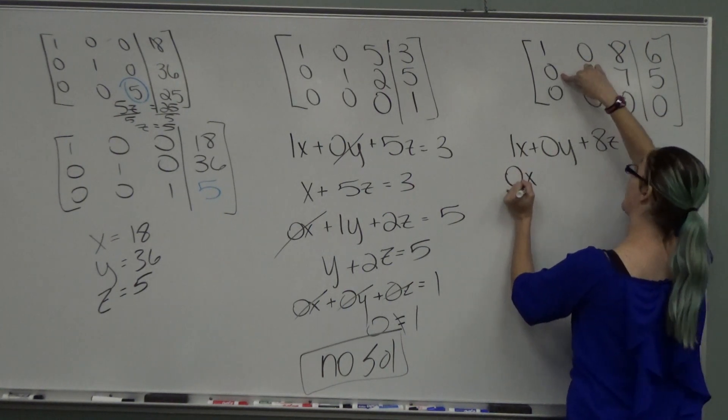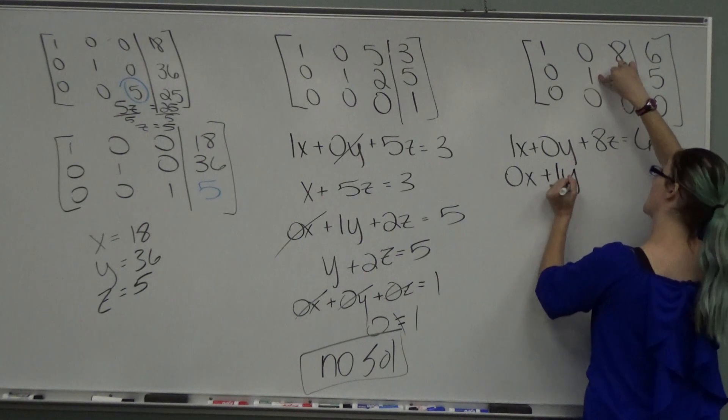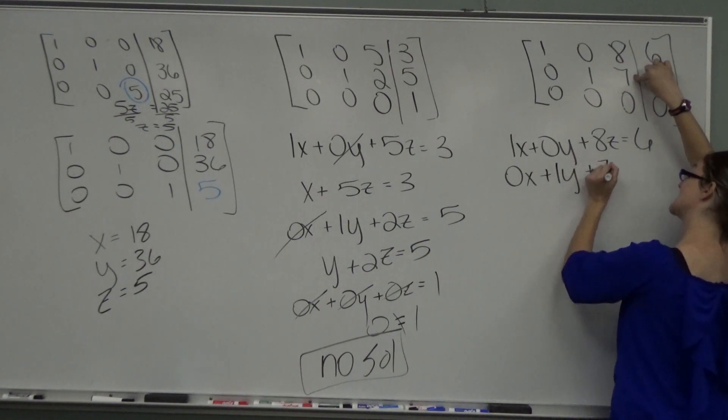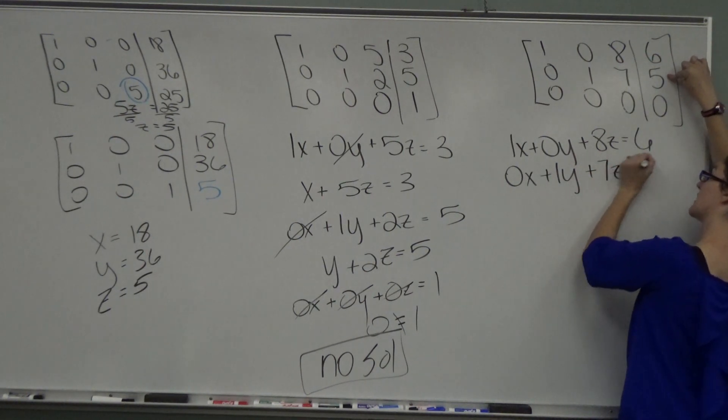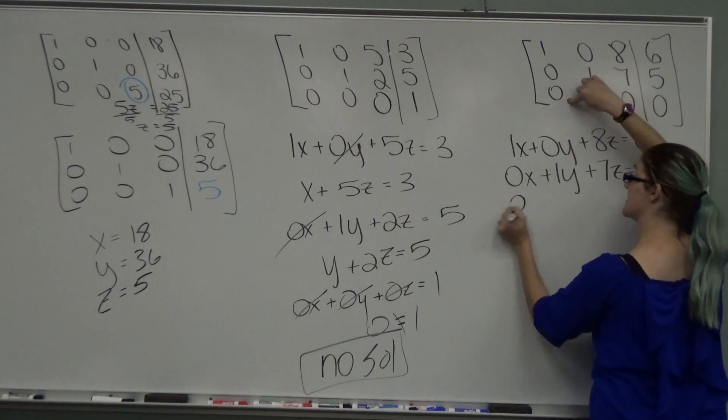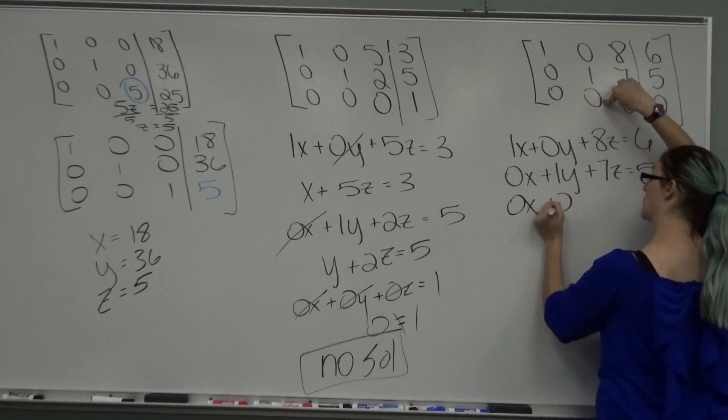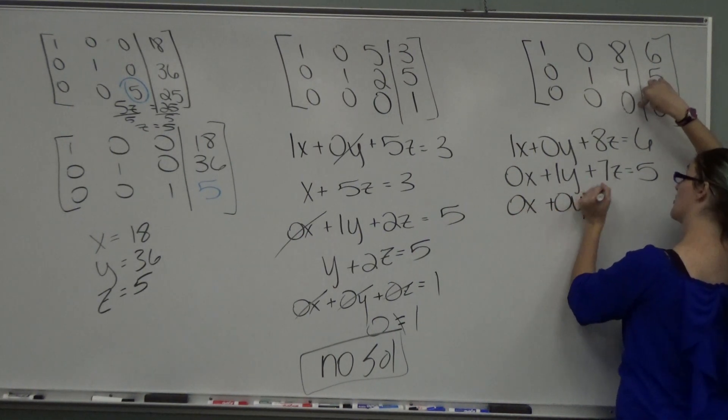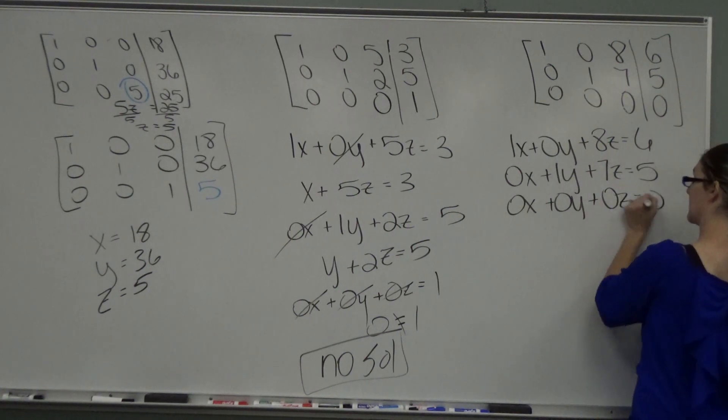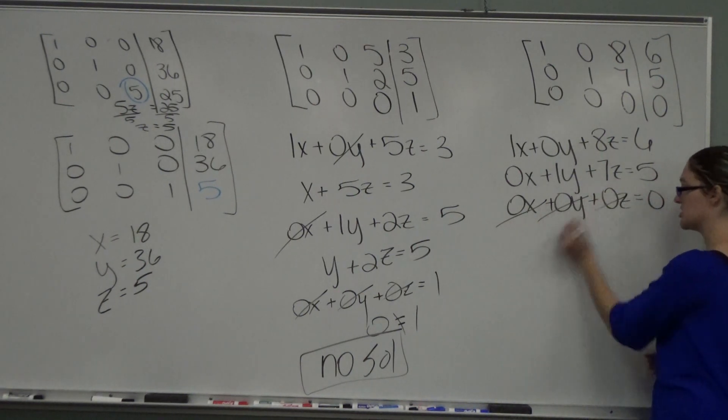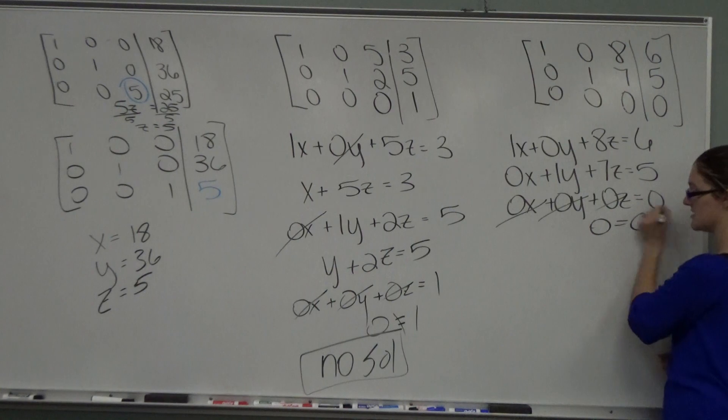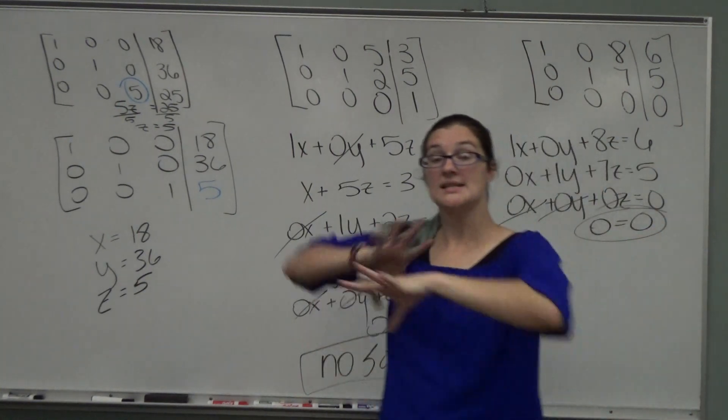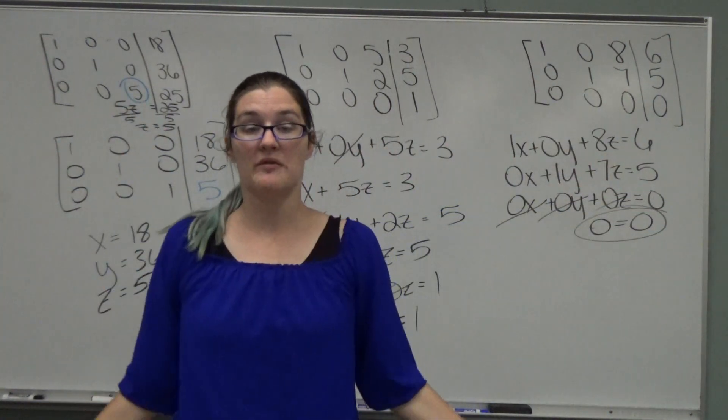So you've got 1x plus 0y plus 8z equals 6. We've got 0x plus 1y plus 7z equals 5. And 0x plus 0y plus 0z equals 0. So this last equation, you get 0 equals 0.